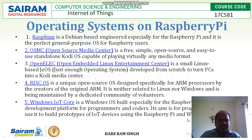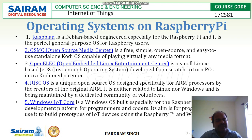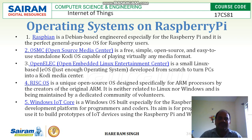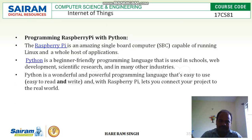So, these are a few of the operating systems explained. Apart from these, there are around 20 to 25 operating systems currently that can run on Raspberry Pi.